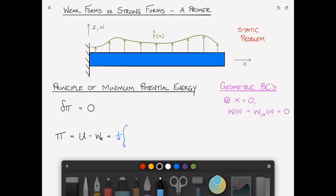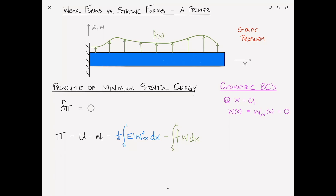The strain energy of a beam is the integral from zero to L of one-half EI W comma XX squared dx. For the work of the external loads — because F and W are in the same direction, the work is positive, and since we subtract it, we have a negative sign — giving negative integral from zero to L of F times W dx. Taking the variation, delta pi equals the integral from zero to L of EI W comma XX del W comma XX dx minus the integral from zero to L of F del W dx, and this is equal to zero.